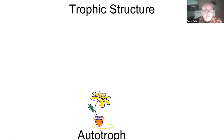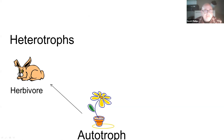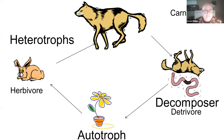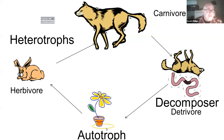Trophic structure: the base of the food chain are autotrophs, which are essentially plants. Plants get eaten by heterotrophs, which are essentially animals. We can divide heterotrophs into herbivores, which eat plants, and carnivores, which eat other heterotrophs. There are also decomposers or detrivores — those that recycle dead material and make it available for plants again. I put a worm here as an example, but usually it's things like bacteria.